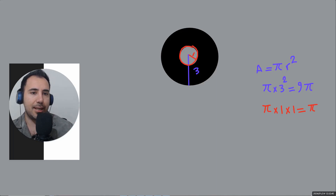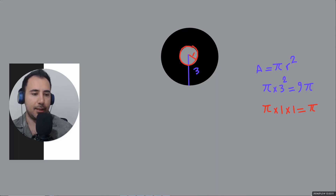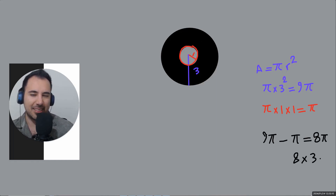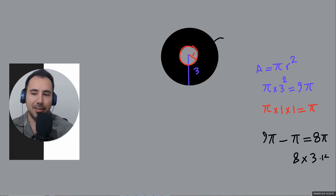The area of the donut is the big circle minus the small one: 9π minus 1π equals 8π. If you wanted the decimal, it's about 24–25, but we don't need that — we keep it as 8π.